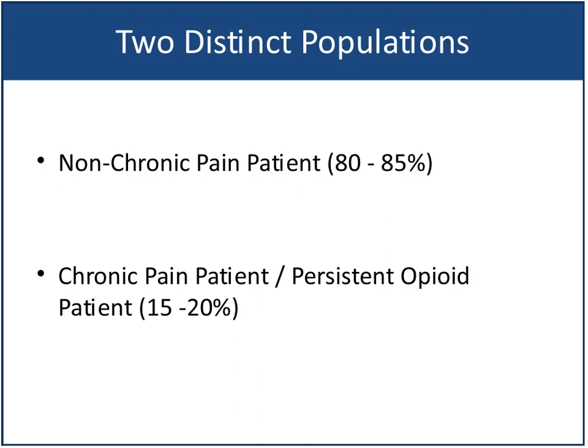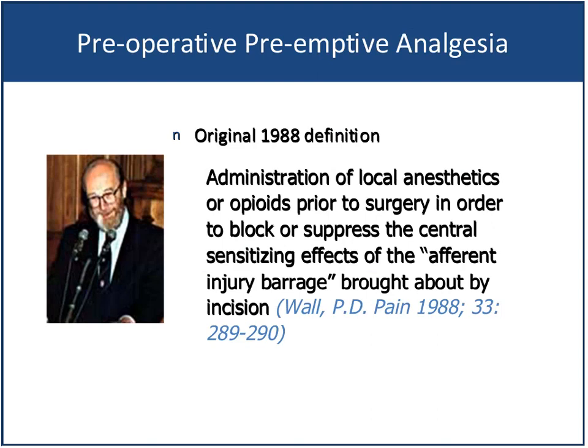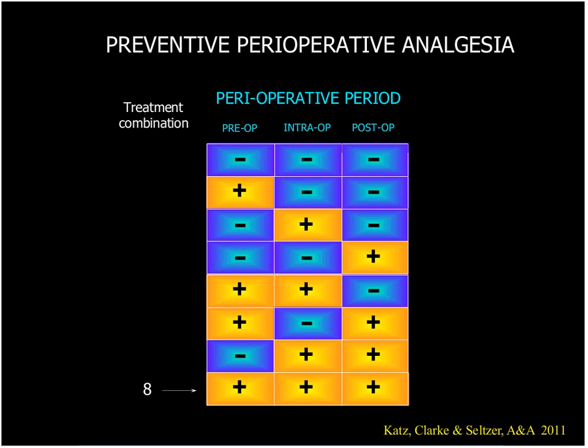In about 1988, Patrick DeWall came up with the concept of preemptive analgesia — administering local anesthetics and opioids prior to surgery to hopefully block or suppress the sensitizing effects of the afferent injury barrage. We know now it takes more than just this simple preemptive approach. Instead, what we've termed 'preventive analgesia' — any pharmacological intervention that changes a patient's outcome well beyond five half-lives of that drug — could be termed a preventive effect. What we aim to do is address this not just post-op or pre-op but throughout the patient's entire journey through the hospital.